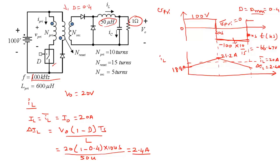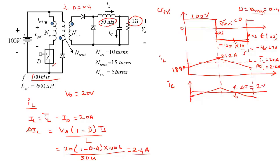The capacitor current I_C waveform has zero average. For a forward converter (like a buck), I_C = I_L − I_L_bar, so it has the same slope shape as I_L. The total swing is still ΔI_L = 2.4 A, ranging from −1.2 A to +1.2 A, with a rising slope during the on-interval and a falling slope during the off-interval.